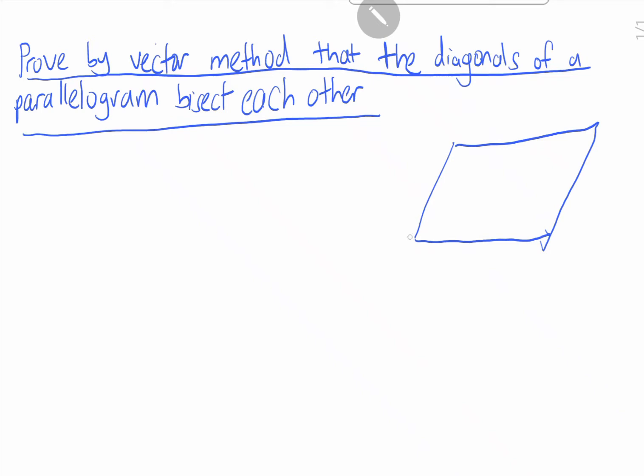So we have point O, point A, point B, point C. The direction vector of OA is A, and the direction vector of OB is B. This will be the diagonal OC, and this will be the diagonal AB.